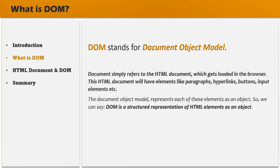When a web page is loaded in the browser, the browser creates an object for each HTML element of the HTML document in the DOM. Once the DOM is created for the web page, we can access the DOM elements using scripts such as JavaScript and we can manipulate them.